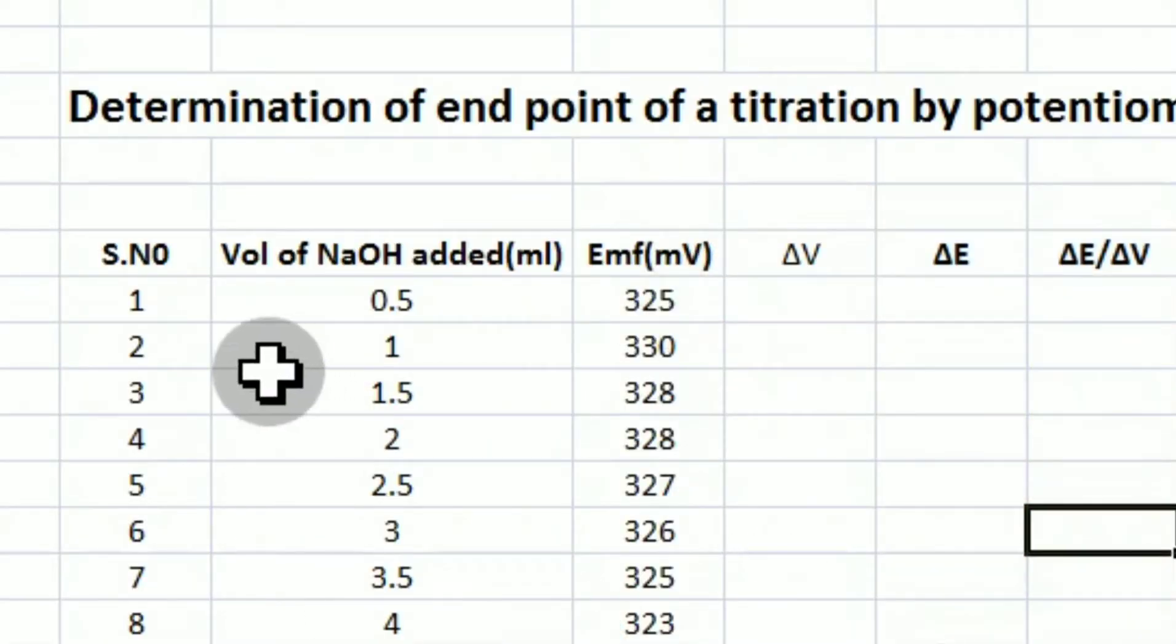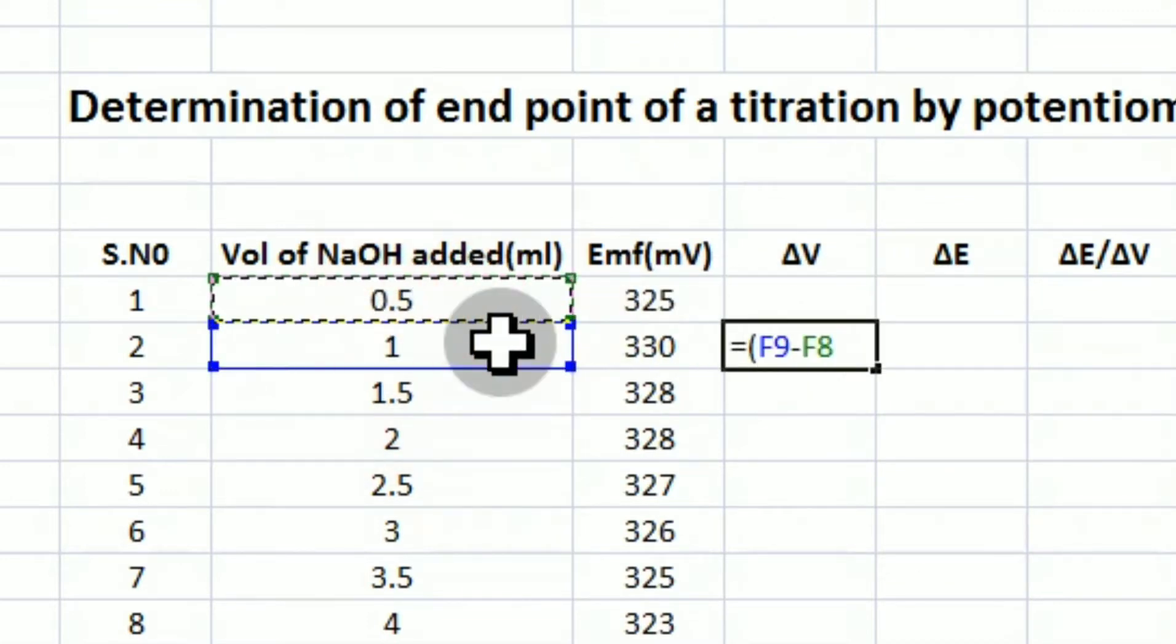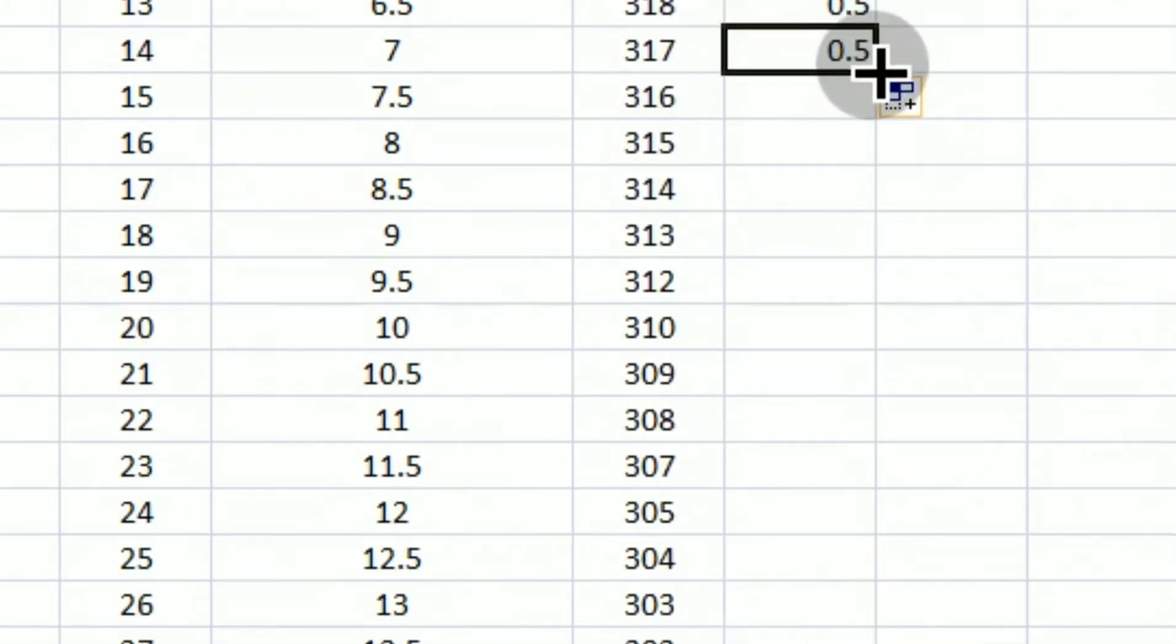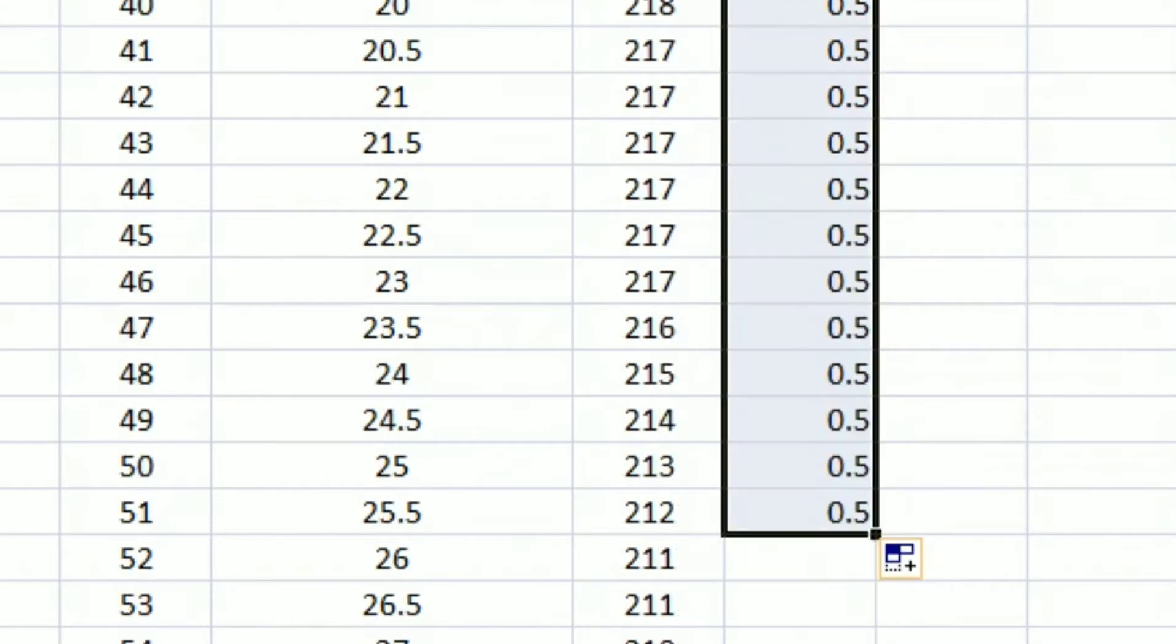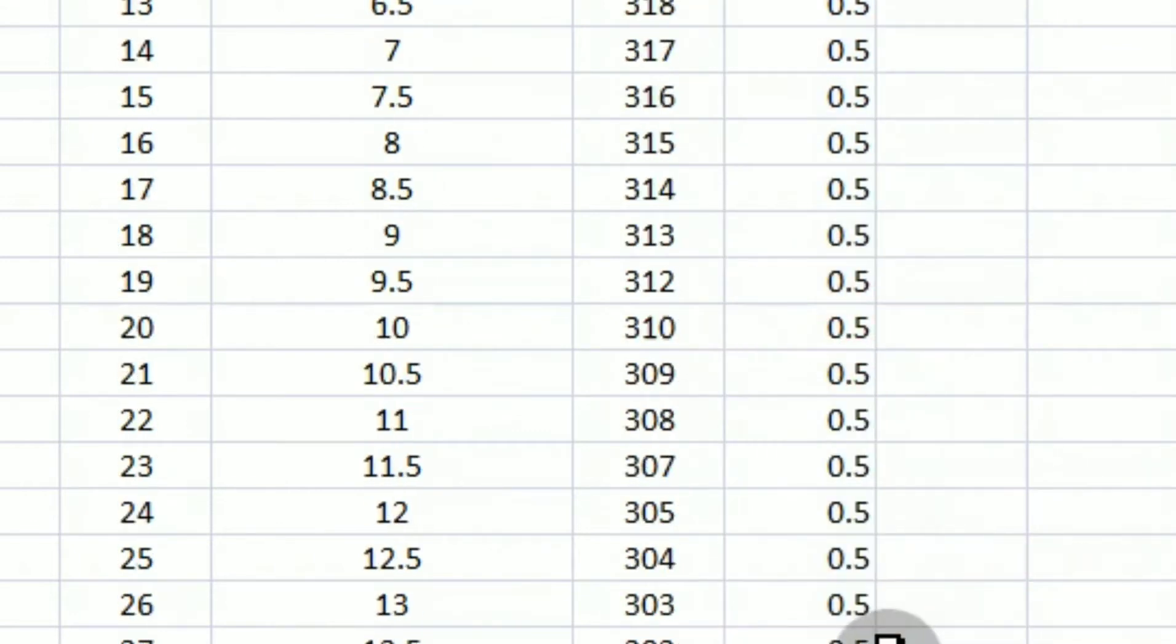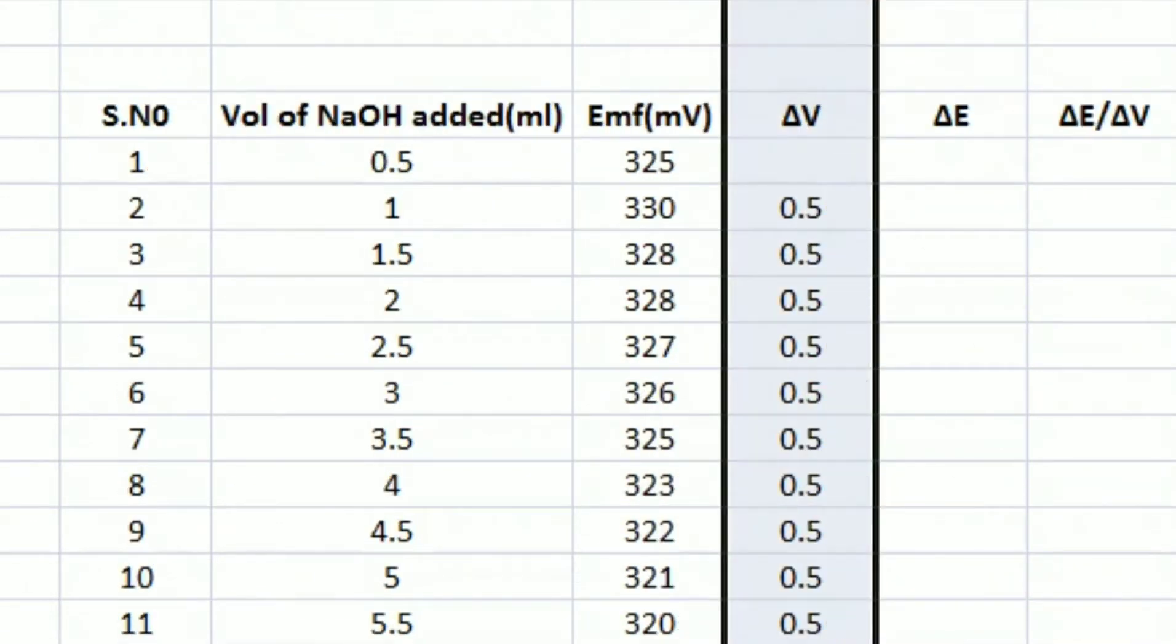So now you enter the volume of sodium hydroxide added and the potential that you have noted into an Excel sheet. Also in the Excel sheet, we have to calculate the delta V value. That is the difference in the volumes or the successive volumes. That is, it's always a 0.5 ml because every time we have added 0.5 ml to this hydrochloric acid solution.